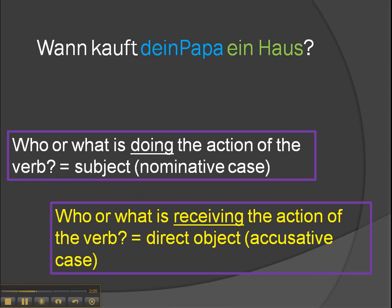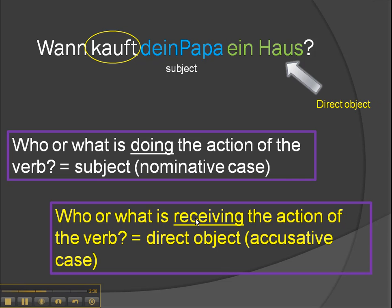Let's look at a couple of more complex ones. There are two questions for finding the subject and therefore the nominative case, and the direct object and therefore the accusative case. Our example: 'Wann kauft den Papa ein Haus?' — when is your dad buying a house? The action here is 'kauft' — buys or is buying. Who's doing the buying, so who's the subject? 'Den Papa.' What's he buying? What's receiving that action? 'Ein Haus' — so it's the direct object and therefore accusative. Even when it's a question, the same rules apply.